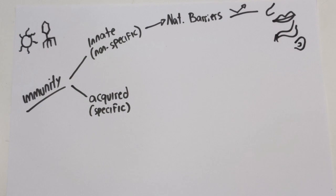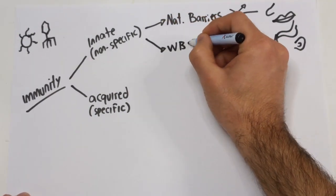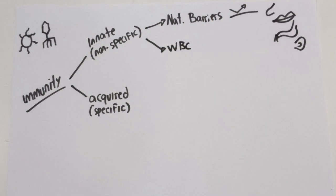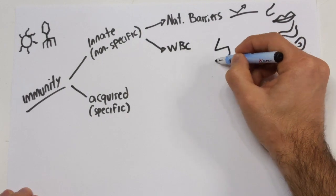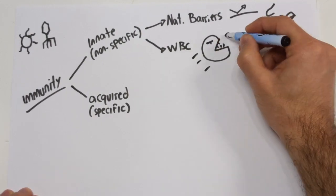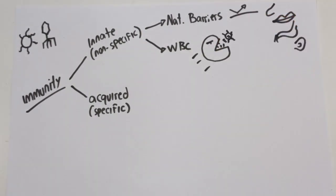If a pathogen somehow manages to get around those barriers, our body has an army of white blood cells ready to deploy. Some of them, non-specific, are cells that specialize in eating or engulfing pathogens. Regardless of who they are, they are called phagocytes, after the Greek, to eat or to devour.